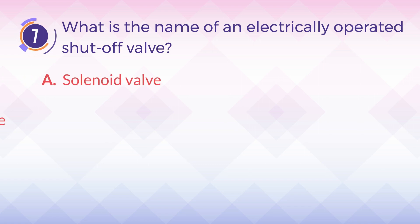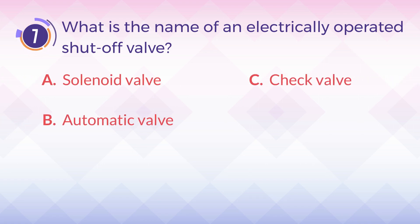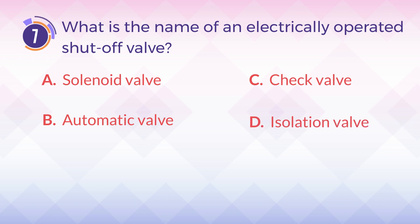Number seven: what is the name of an electrically operated shut off valve? A) solenoid valve, B) automatic valve, C) check valve, D) isolation valve.